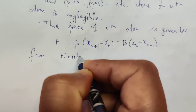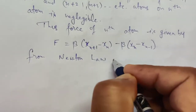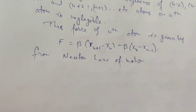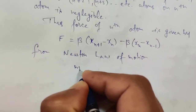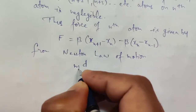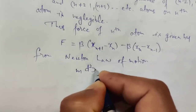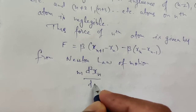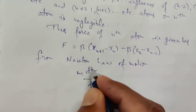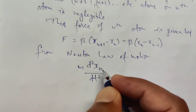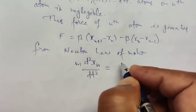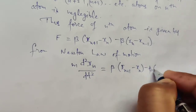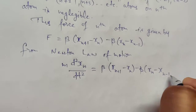From Newton's second law of motion, force equals mass times acceleration. Since the spring is massless, we use the mass of the atom. The acceleration is the second derivative of displacement of the nth atom. So: m * (d²x_n/dt²) = beta * (x_{n+1} - x_n) - beta * (x_n - x_{n-1}). This is equation of motion, equation number two.